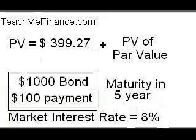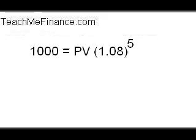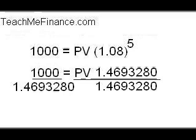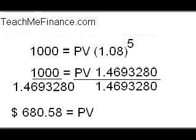The present value of the par value is the $1,000 that you're going to get, discounted by 8%, which is the market interest rate. To understand this, you use the time value of money. The equation looks like this: $1,000, the future value, equals the present value times 1.08 to the power of 5. 1.08 to the power of 5 equals 1.469328. So you divide both sides by that number and you get $680.58.